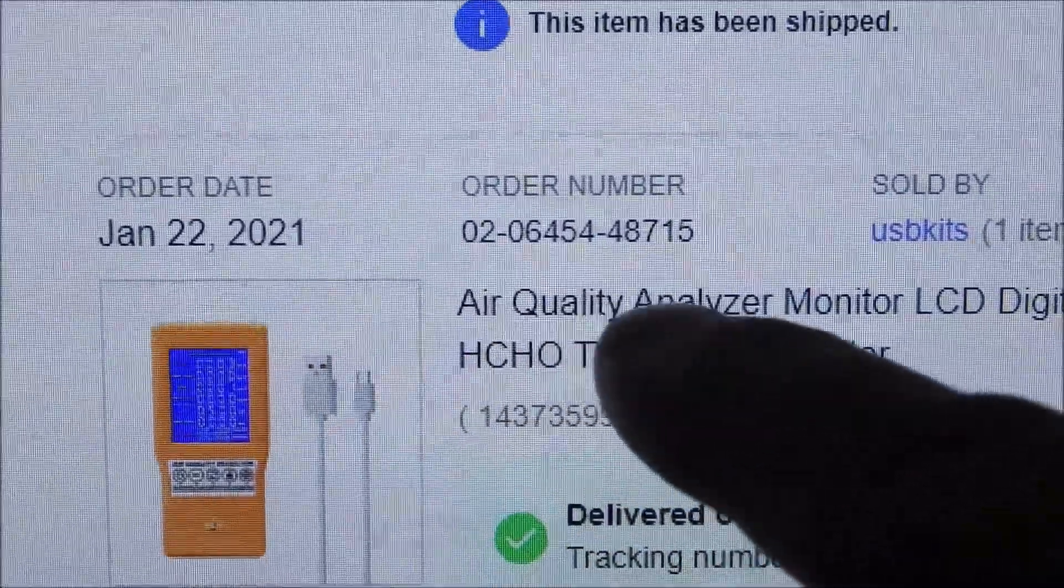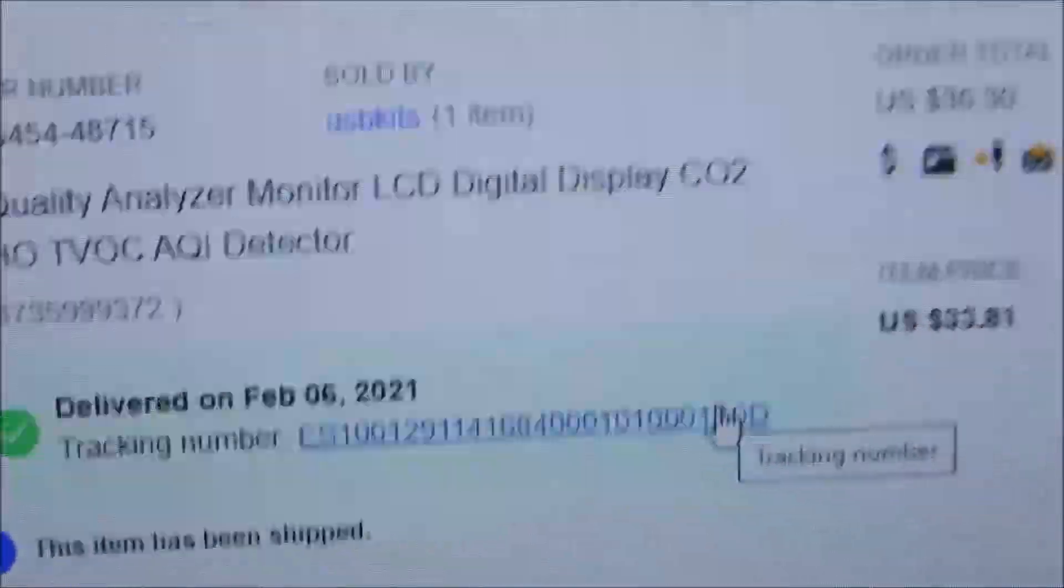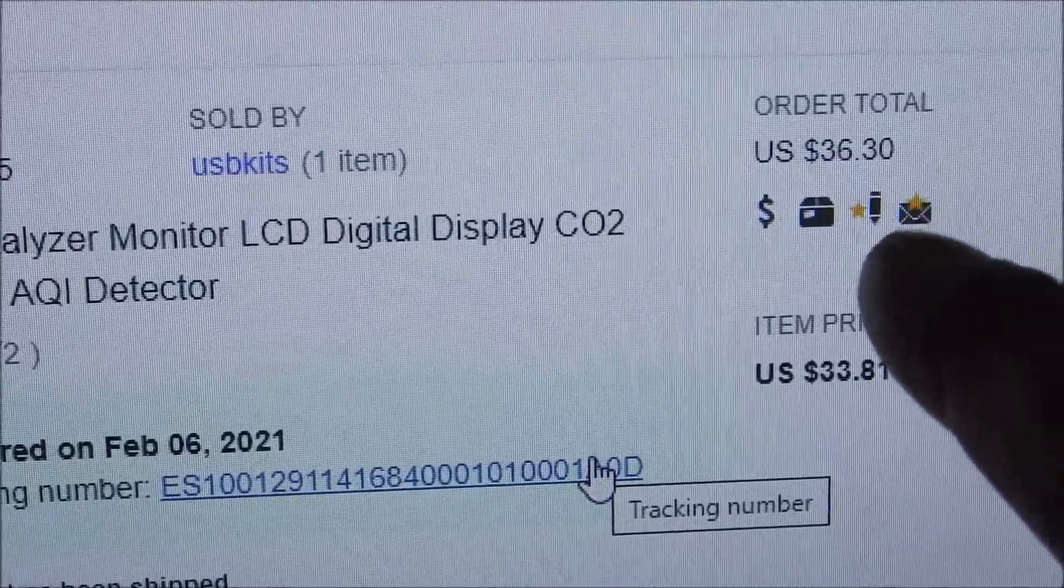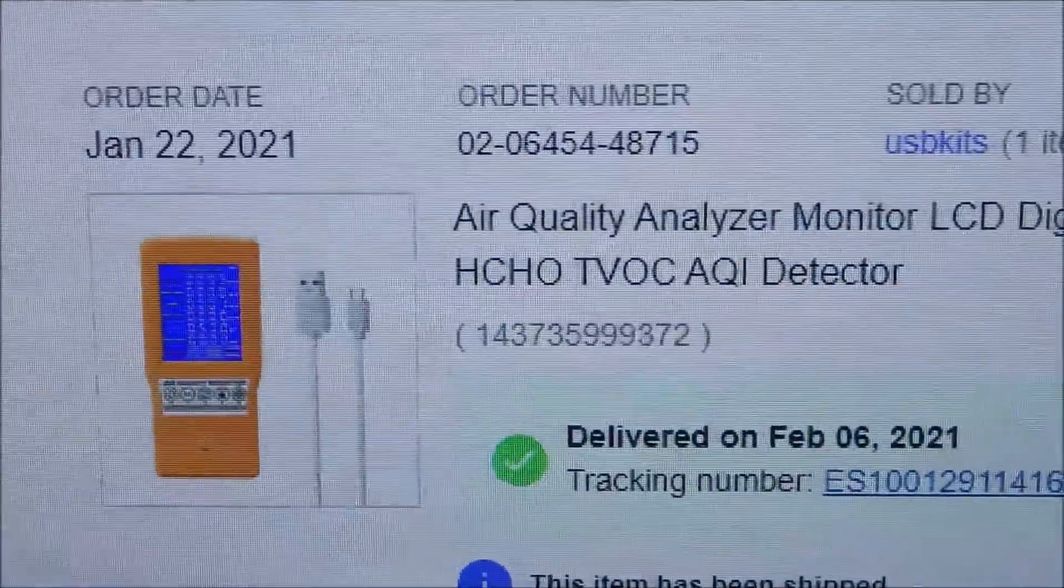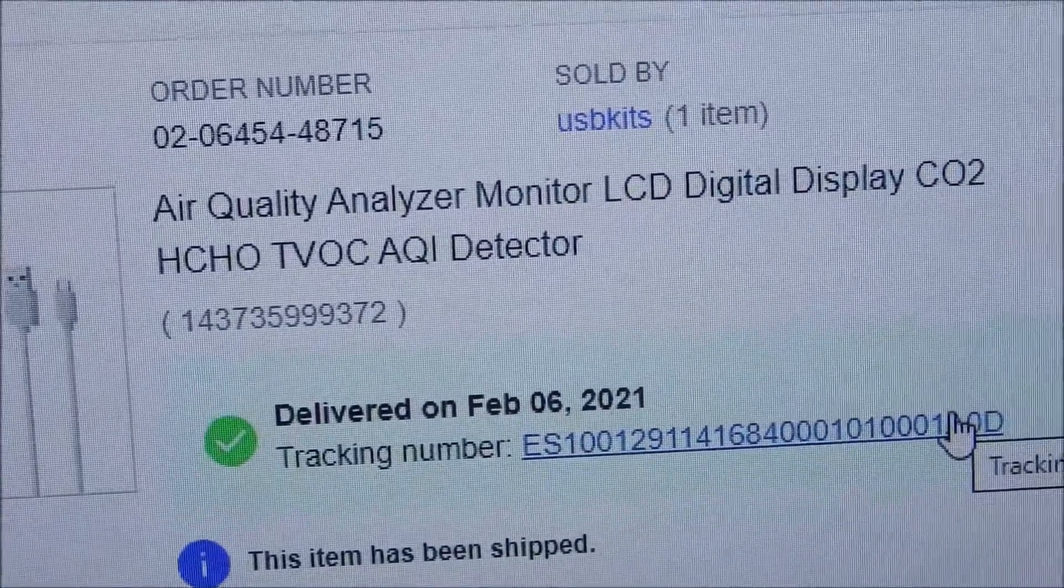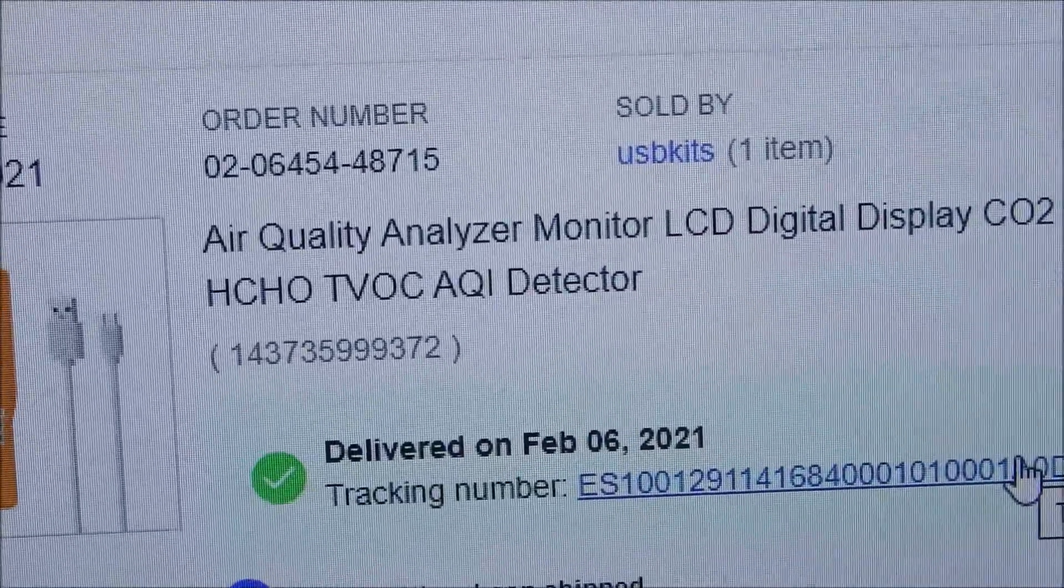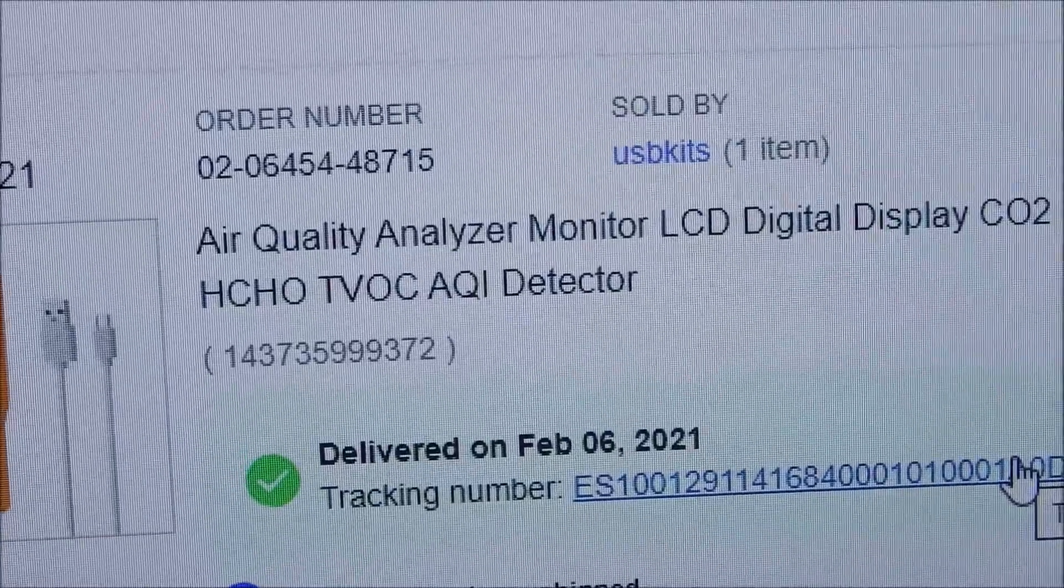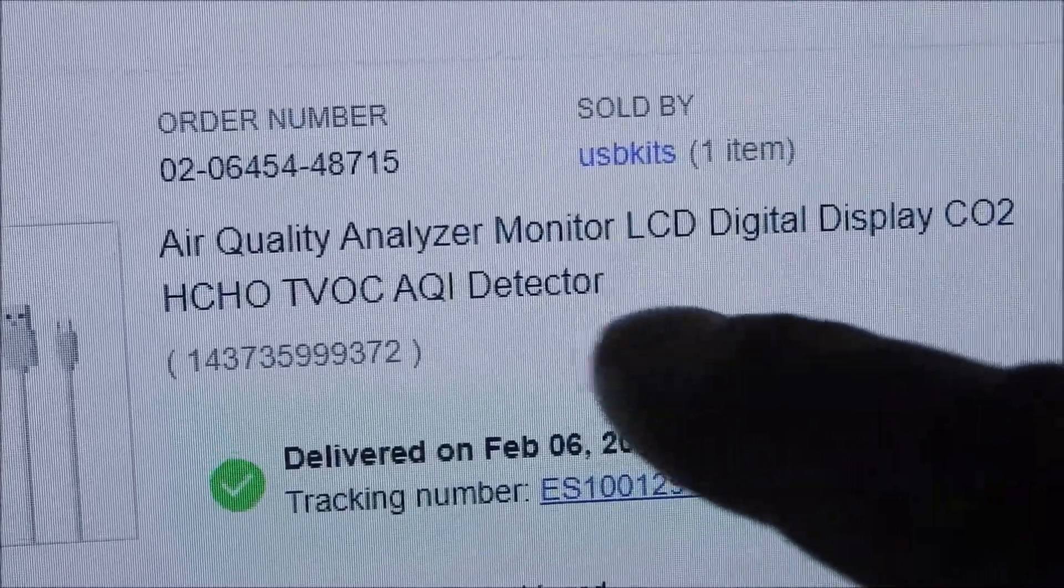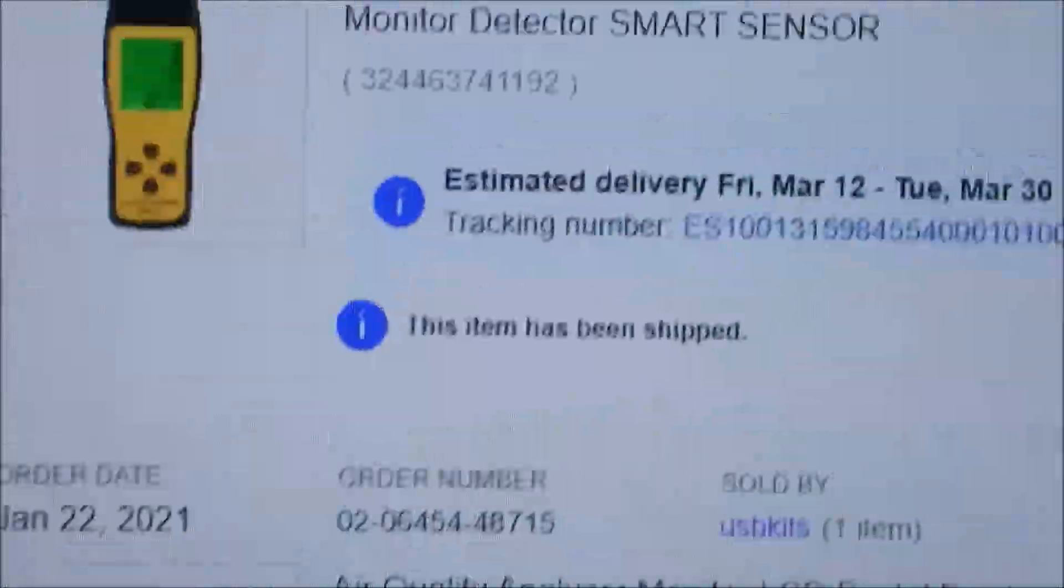So this is the meter I purchased January 22nd, 2021. The total was $36.30 with shipping from China. It's an air quality analyzer monitor with LCD digital display for CO2, HCHO which is formaldehyde, and then TVOC is total volatile organic compounds, and then air quality ion detector AQI. So let's see.